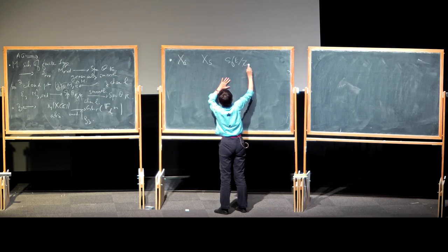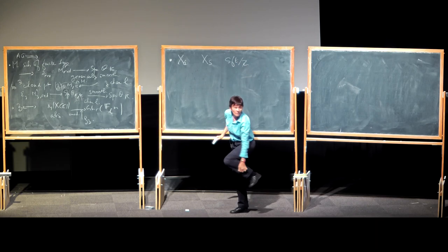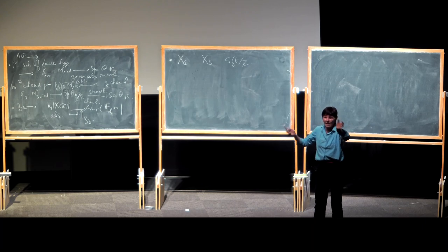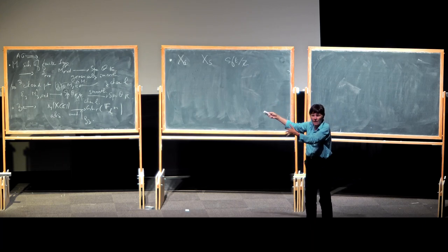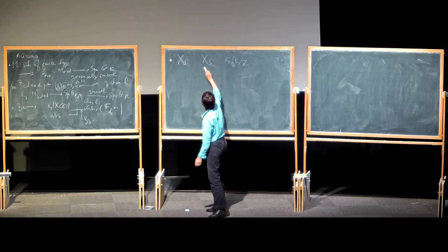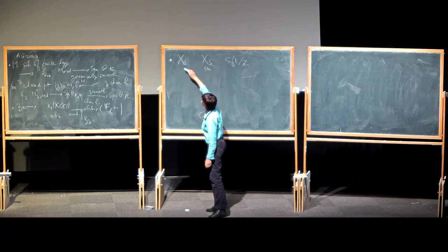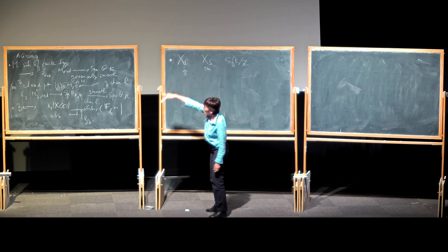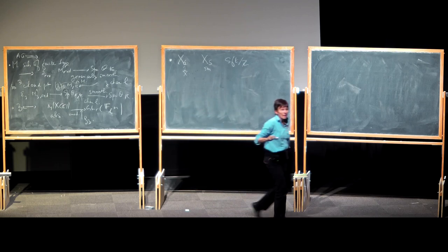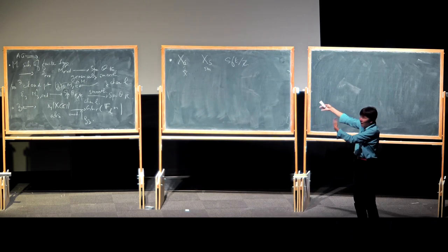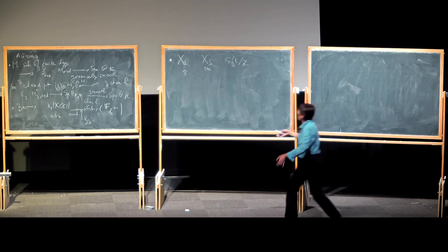So we have X over Z which is base-changed from X over S, where S is of finite type over Z. X over S is still smooth, and if I had fixed this good compactification at the beginning I can shrink S so that I still have a good compactification over the model.